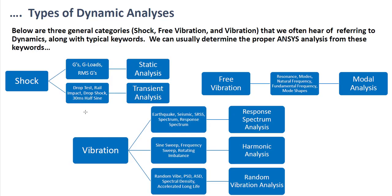To identify which dynamic analysis to use: if keywords like gravity loads or RMS gravity are present, we do static analysis. If keywords like drop test, real impact, drop shock, or 30 ms half-sine appear, we do transient analysis.